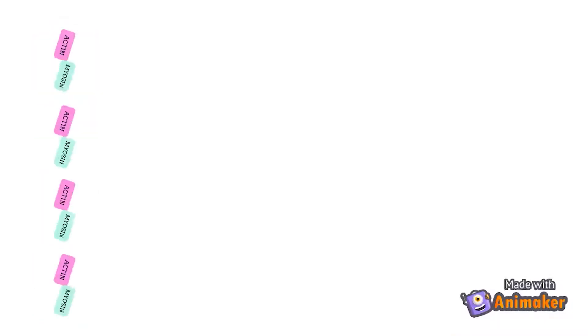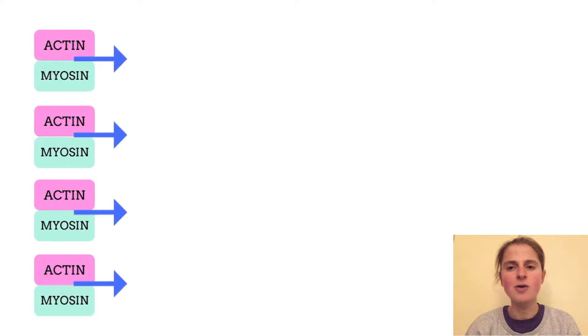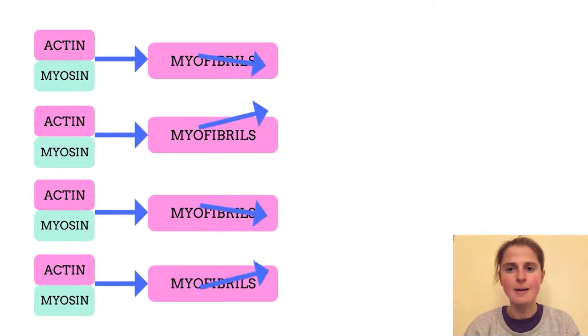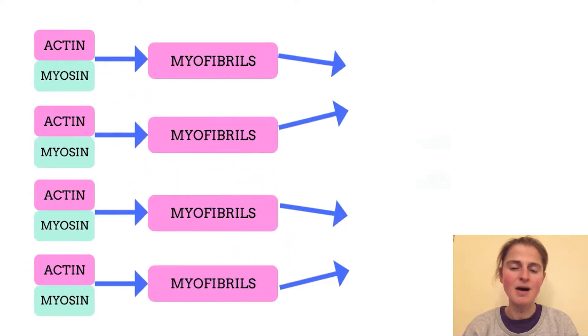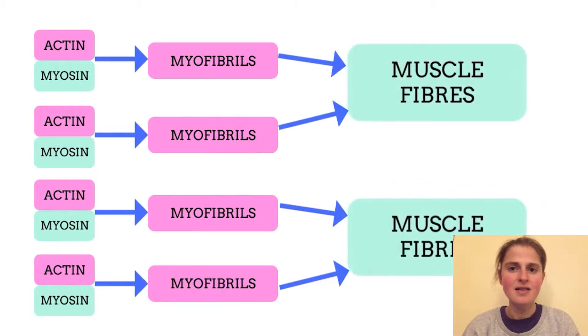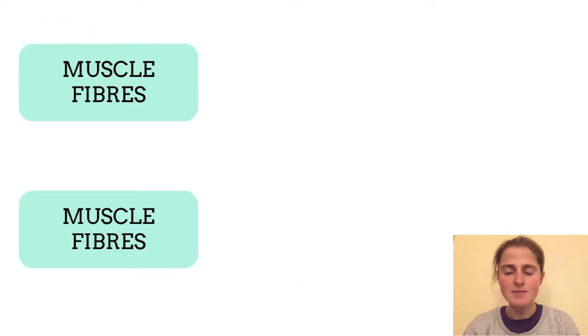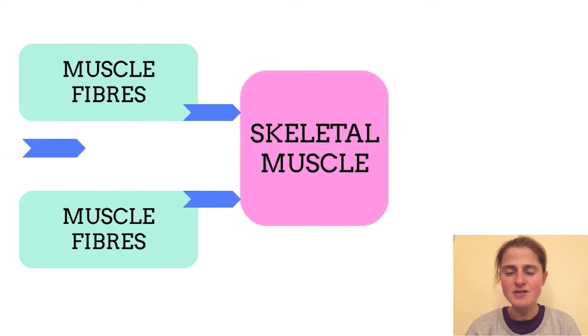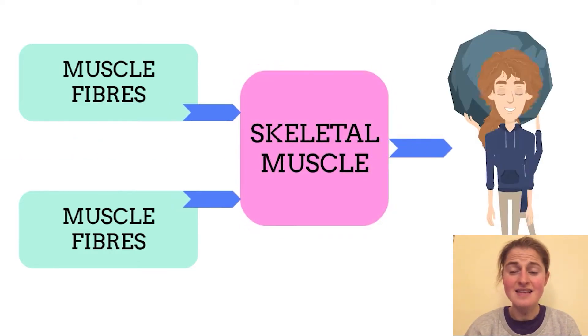That's a lot of thousands, which is why muscles are so strong. Think of myofibrils like a long rope made up of lots of different strands representing actin and myosin, then imagine several ropes spiralled together to form a muscle fibre. Actin and myosin are responsible for muscle contraction as they slide over each other in a process known as cross-bridge cycling.